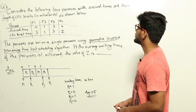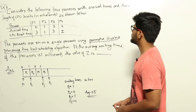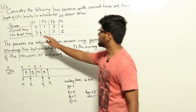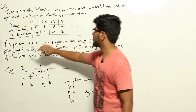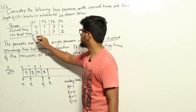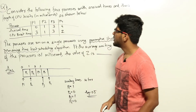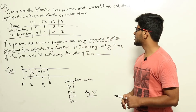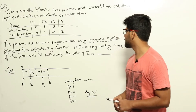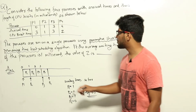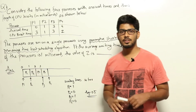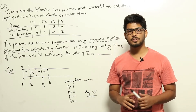Consider the following four processes with arrival times and CPU burst lengths in milliseconds as shown below. Processes P1, P2, P3, P4 have arrival times 0, 1, 3, and 4, and CPU burst times 3, 1, 3, and Z respectively. The processes are run on a single processor using the preemptive Shortest Remaining Time First (SRTF) scheduling algorithm. If the average waiting time of the processes is 1 millisecond, find the value of Z.